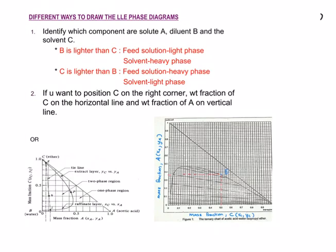Now let's focus on the right triangular ternary diagram. There are different ways to draw the LLE phase diagram. First, you need to identify the solute A, diluent B, and solvent C. If your diluent B is lighter than your solvent C, the feed solution will be in the light phase and the solvent in the heavy phase. If solvent C is lighter than diluent B, the feed solution will be in the heavy phase and the solvent in the light phase.